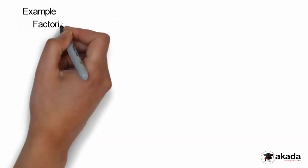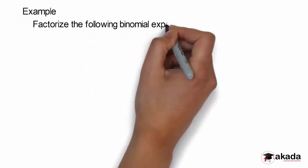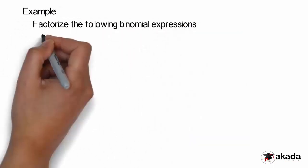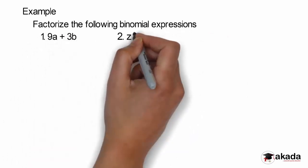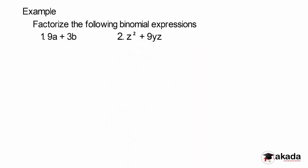For example, let's factorize the following binomial expressions. I have 9a plus 3b, and the second one is z raised to power 2 plus 9yz. So how do we do this?